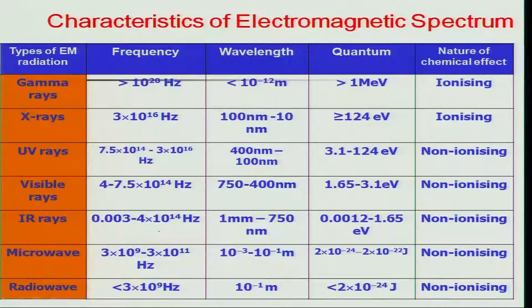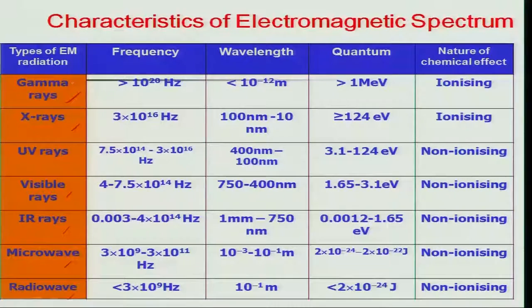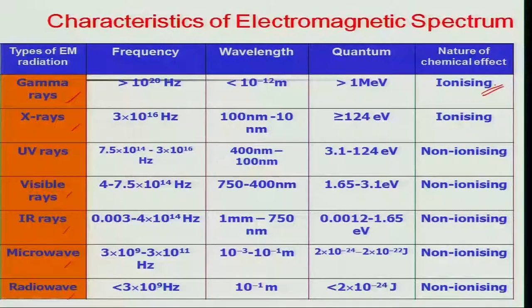If you understand the characteristics of the electromagnetic spectrum of light, it has various sources of radiation — from gamma rays, X-rays, UV rays, visible rays, infrared rays, microwave rays, and radio waves. It is the gamma rays that play a major role in pest management through radiation techniques. Because of the frequency, wavelength, and quantum of radiation, they induce a chemical effect known as the ionizing effect, which has a sterility-inducing effect.